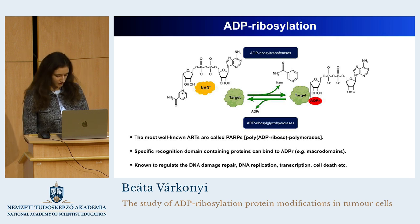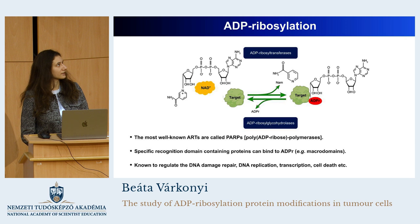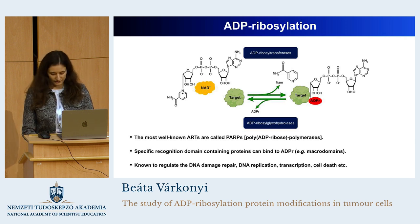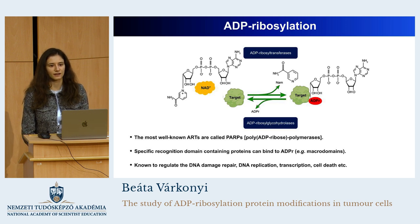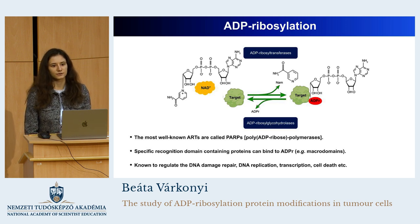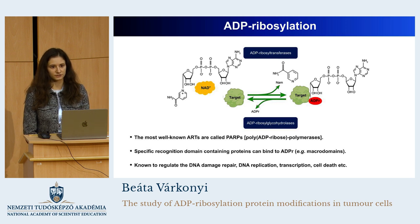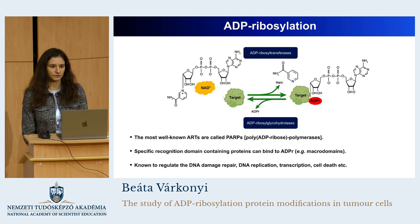It is generated by ADP ribosyl transferase enzymes, or ART enzymes. The most well-known ARTs are PARPs, or poly ADP ribose polymerases. There are proteins which contain a specific recognition domain and can bind to ADP ribose, for example macrodomains.